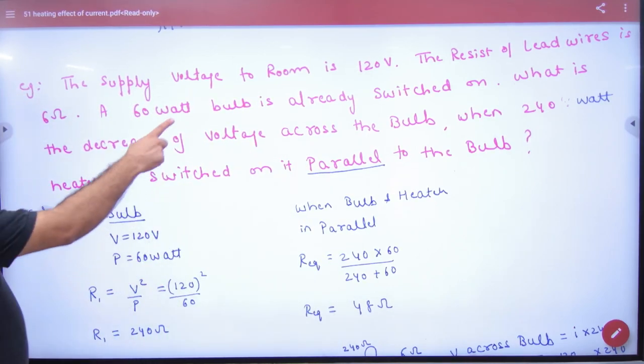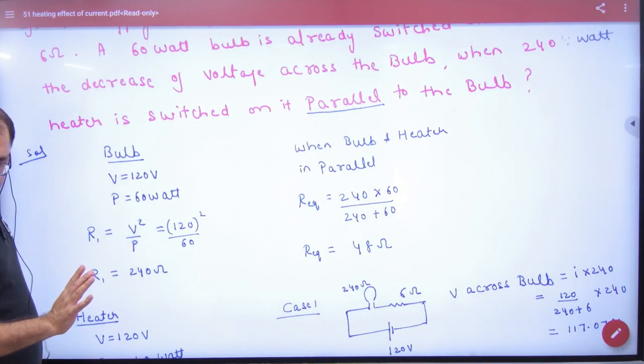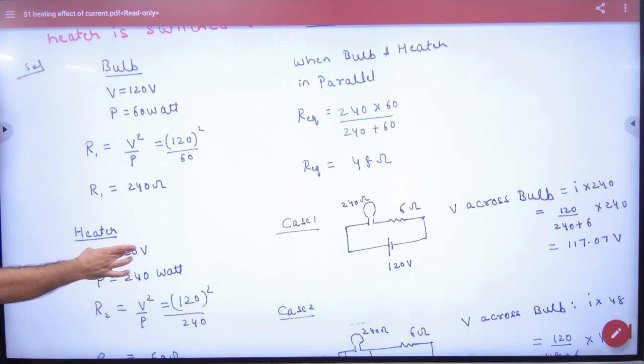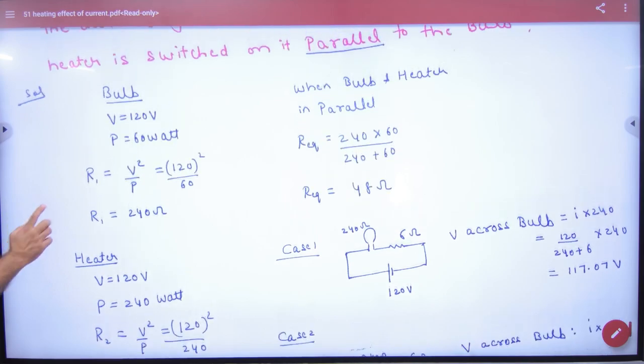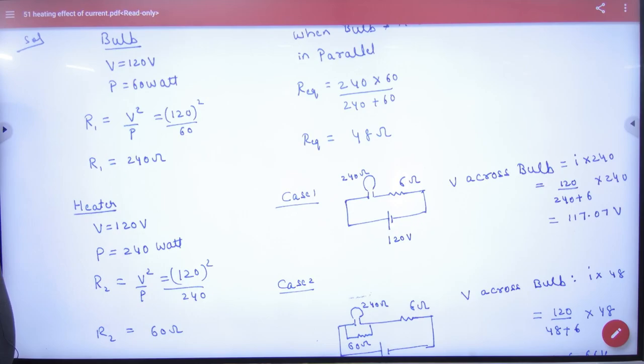The bulb is 60 watts at 120 volts. The heater is 240 watts. The first step is finding the resistances. What is R1? What is R2? We need to find R1 and R2.